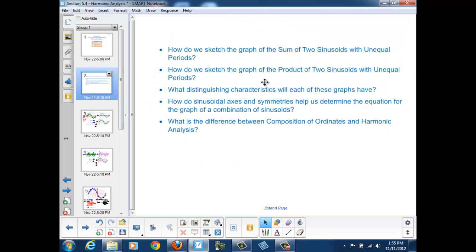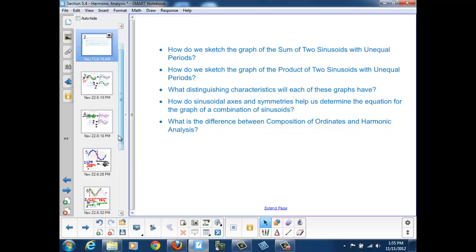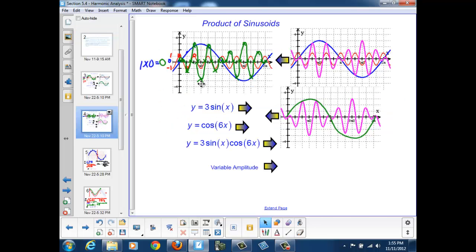How do we sketch the graph of the product of two sinusoids with unequal periods? Here, we look for places where either function is at a minimum, a maximum, or zero. So, every time we have a zero on either function, we'll have a zero on our product. And every time we multiply by one, we lie on the larger curve. And every time we have a value of negative one on our smaller function, we flip away from our original envelope curve.